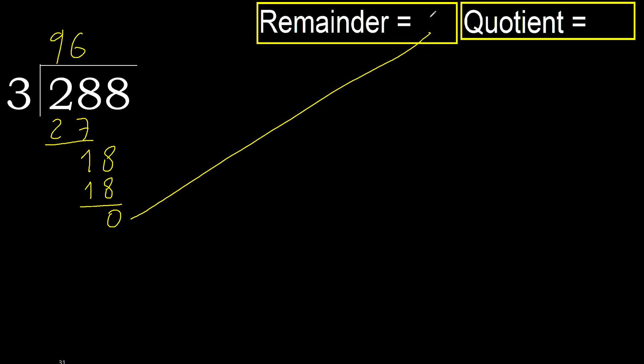Therefore, finish. 288 divided by 3 is 96.